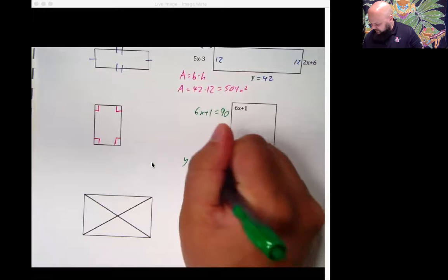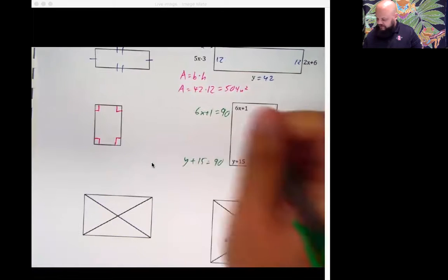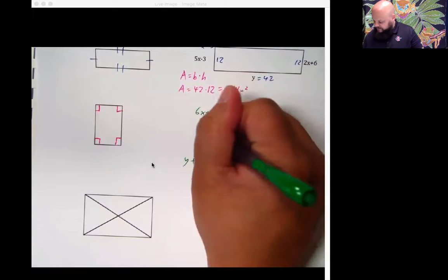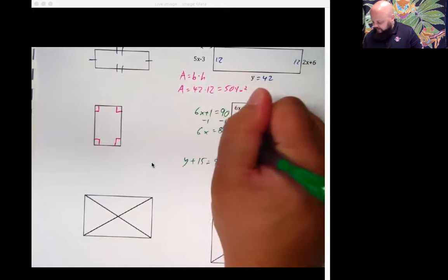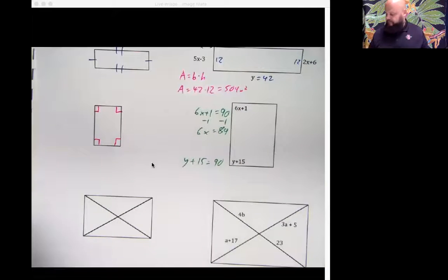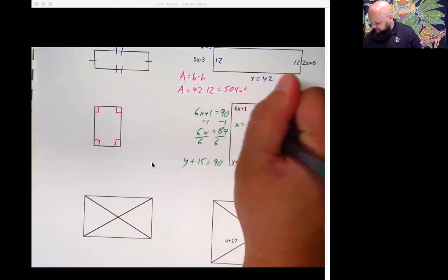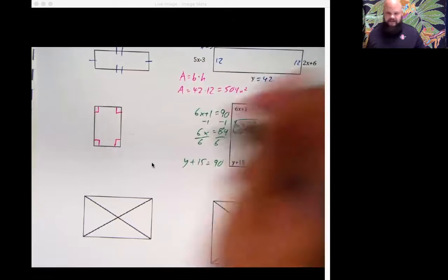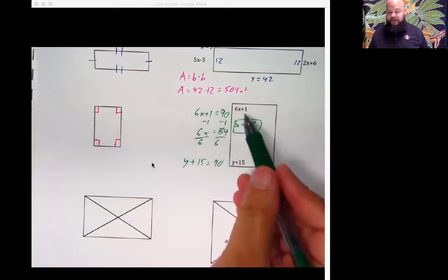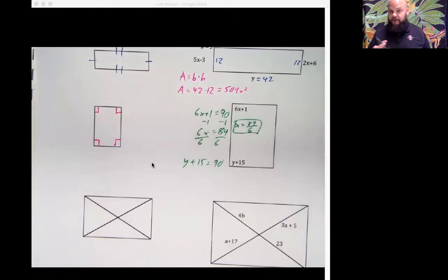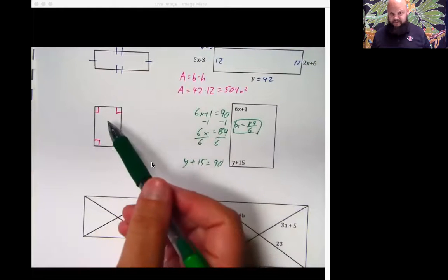And y plus 15 is equal to 90. Up here, you'd subtract 1 from both sides. You'd have 6x is equal to 89. And you may end up crying yourself to sleep. Because after you divide by 6, x equals 89 over 6. Yikes. I know what you're thinking. Mr. Buell, plug it back in and see what the angle is. I already know what the angle is. It's 90. That's where we started.